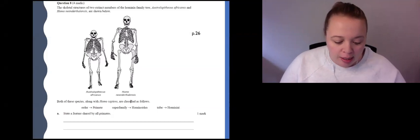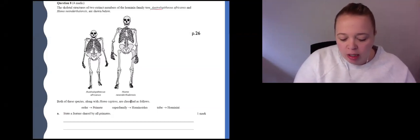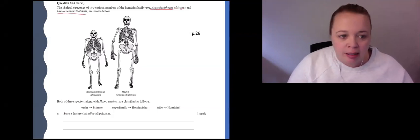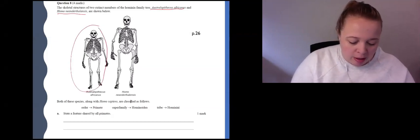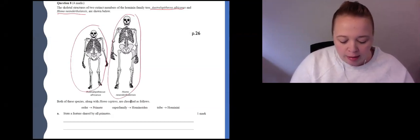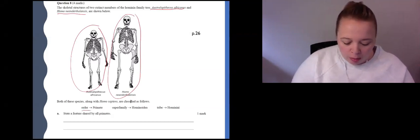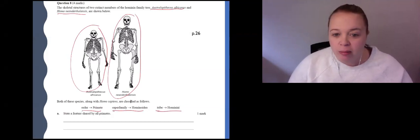This question here says the skeletal structures of two extinct members of the hominin family tree, Australopithecus africanus and Homo neanderthalensis, are shown below. So here is Australopithecus on the left, and here is Homo neanderthalensis on the right. These are all order primate, superfamily hominoidea, and the tribe is hominini, or essentially these make these hominins. Both of these are hominins.